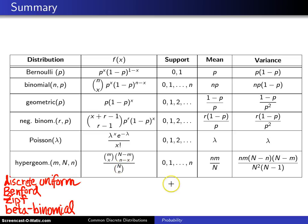So this is the summary slide of all of the distributions that were covered in this chapter on discrete distributions. The next chapter covers popular continuous distributions.